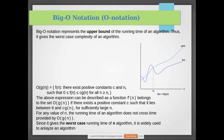Big O notation specifies only the upper bound — there is no lower bound. The program will execute up to the upper bound, which we call the worst case. For example, if you take an unsorted array and search for an element that is at the 100th position, you have to go through the whole array in a linear search. That is what we mean by upper bound — the worst case.